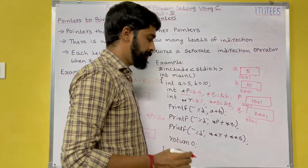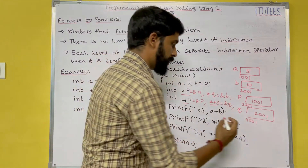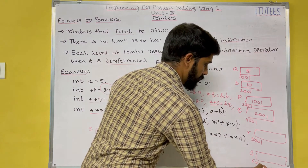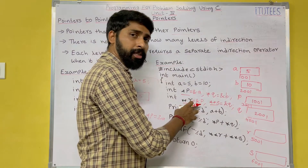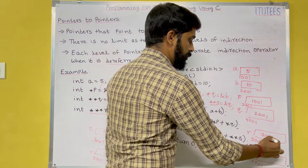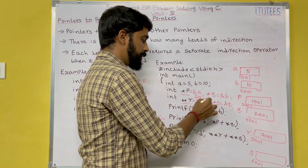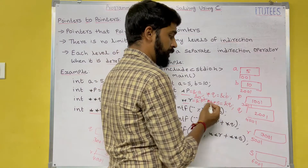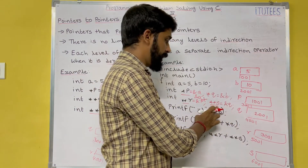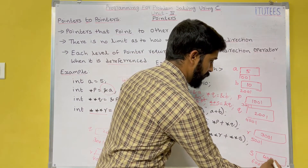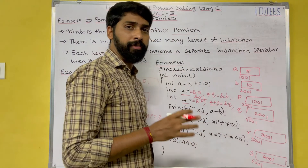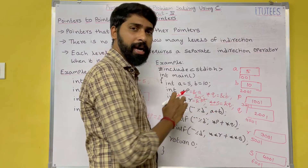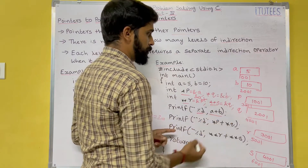`p` and `q` also have some addresses — let us assume 3001 and 4001. Next we take pointer to pointers `r` and `s`, which also have some addresses — let us assume 5001 and 6001. So `r` holds `&p` — the address of `p` is 3001 — and `s` holds `&q` — the address of `q` is 4001. Using `printf` with `a + b` prints 5 plus 10 equals 15.